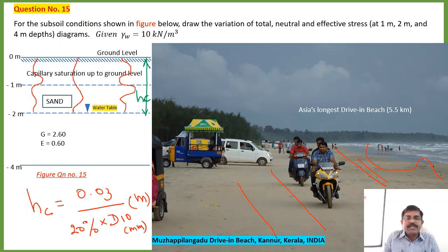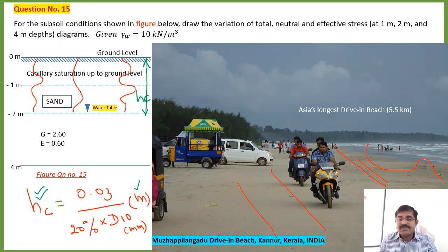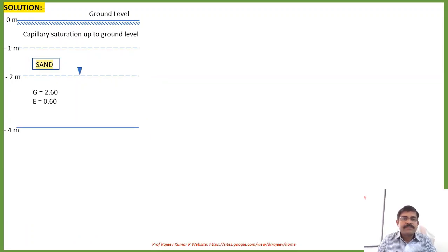Here HC is given as 2 meters from the water table, up to the ground level. In some questions you need to calculate this using 0.03 divided by 20% of the effective diameter of the soil, and the answer will be in meters. The capillary rise is from the water table to the ground level, as shown in this figure.